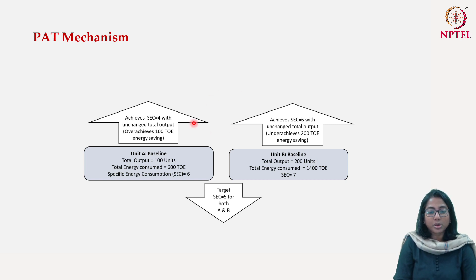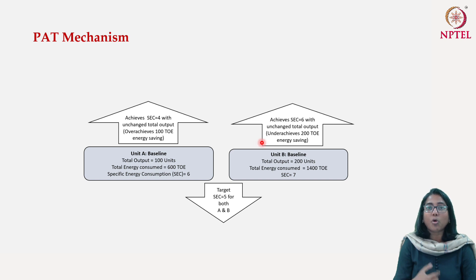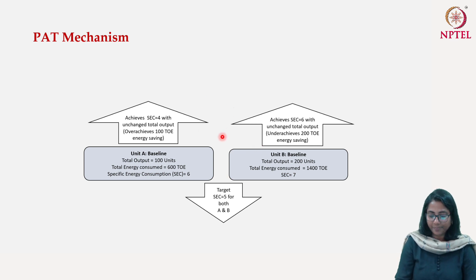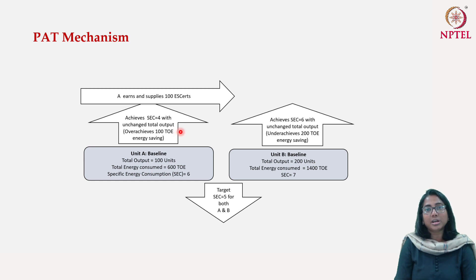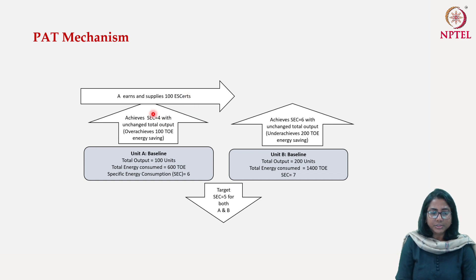Now you can see there is an opportunity to create a market. Unit A has over-achieved, so it has energy efficiency it can sell. Unit B has under-achieved, so it wants to buy energy efficiency. This scope was exploited under the PAT mechanism — the unit that over-achieved will be issued energy saving certificates, or ESCerts. Because the saving is 100 tons of oil equivalent, BEE will issue one energy saving certificate per ton, giving Unit A 100 ESCerts that can be sold in the market.